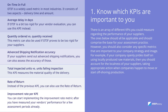Advanced Shipping Notification (ASN) accuracy: if your suppliers send out advanced shipping notifications, you can also assess the accuracy of those. Find the percentage of a supplier's accurate ASNs by taking the number of accurate ASNs, dividing it by the total number of ASNs received, then multiplying the result by 100.